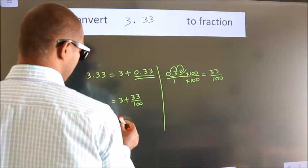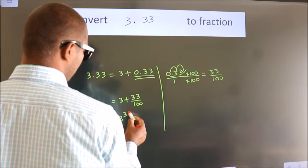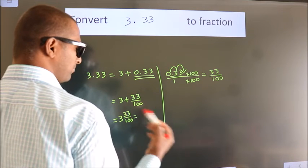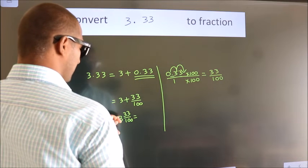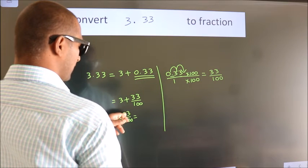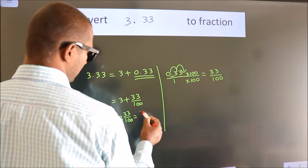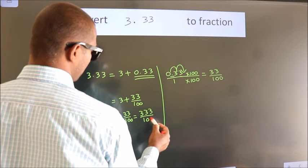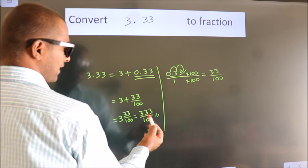In mixed fraction, it is 3 and 33 over 100. In improper fraction, it is 3 into 100, 300 plus 33. 333 by 100 is our fraction.